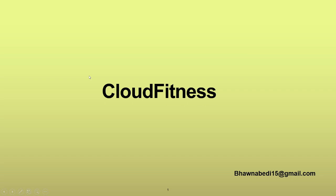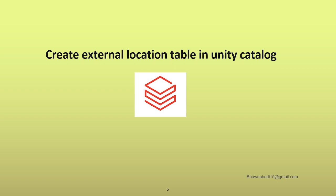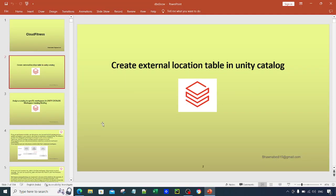Hello and welcome to Cloud Fitness. In today's video we are going to see how we can create an external location table in Unity Catalog — how we can create a table where the underlying data files reside in the storage container of our choice. In previous videos, tables were managed tables where the underlying data files reside in the Unity Catalog metastore. In this case we want to create an external table where the underlying data files reside in a storage container outside the metastore, and you can do that using the external location feature in Unity Catalog.